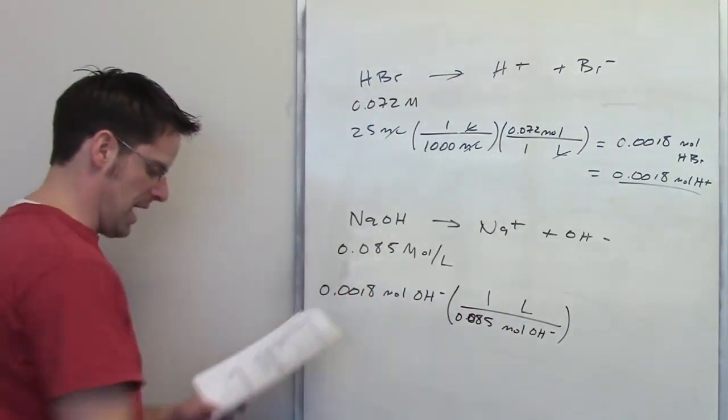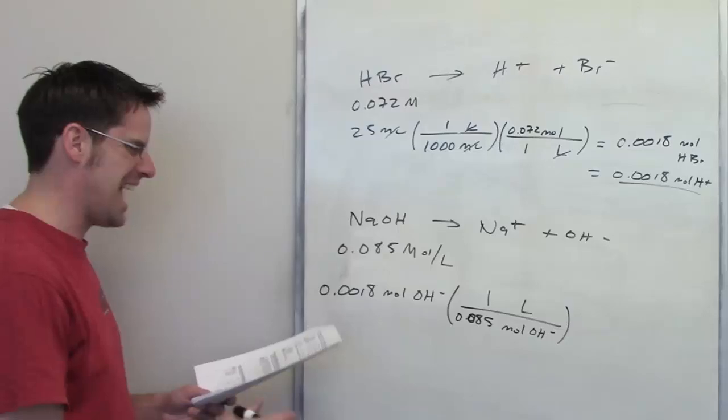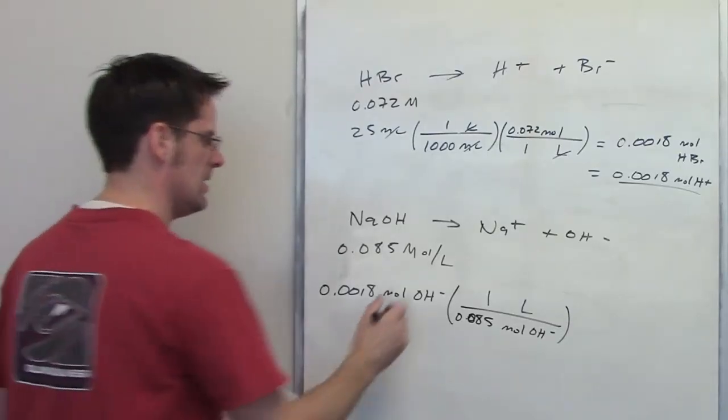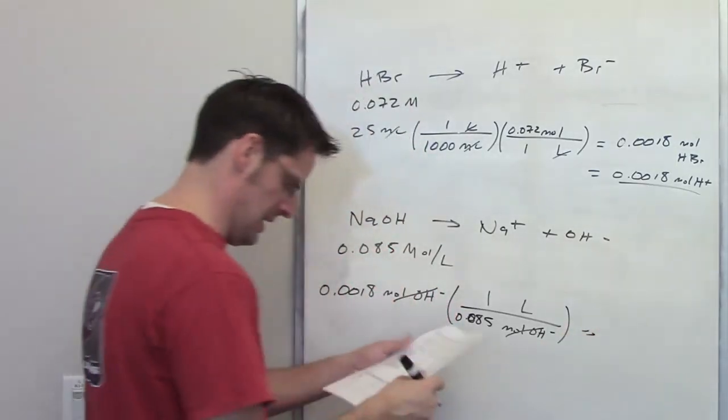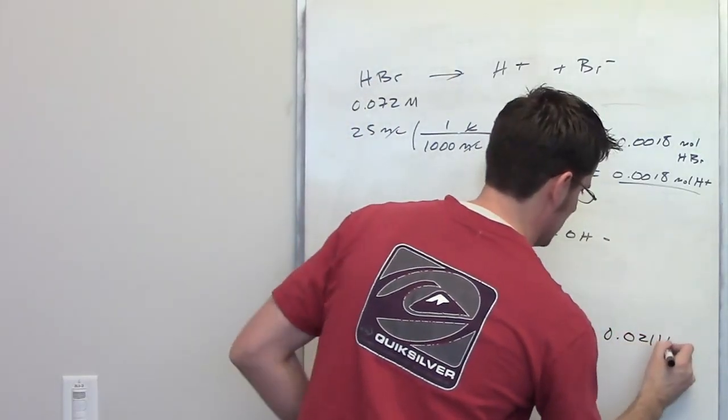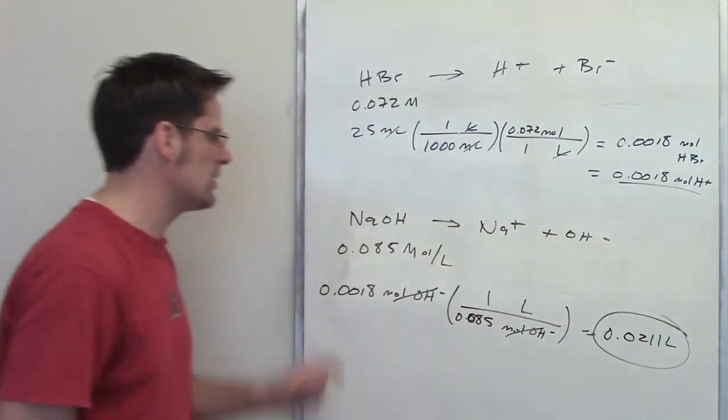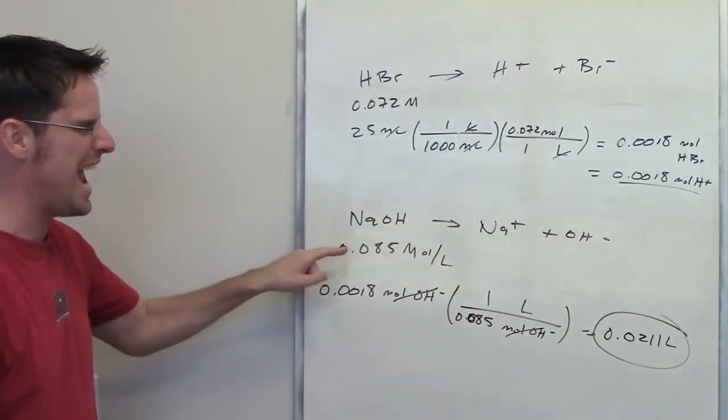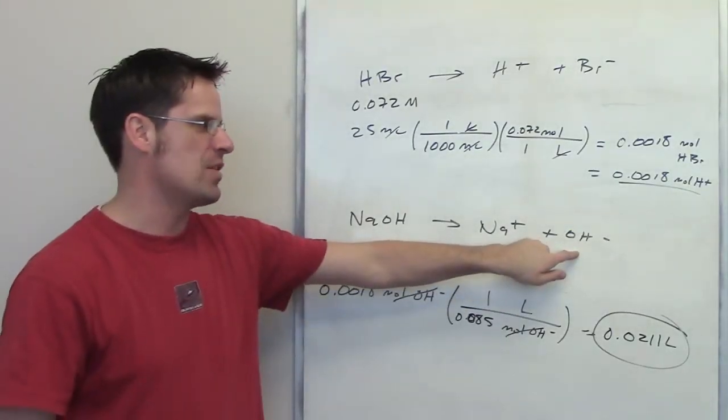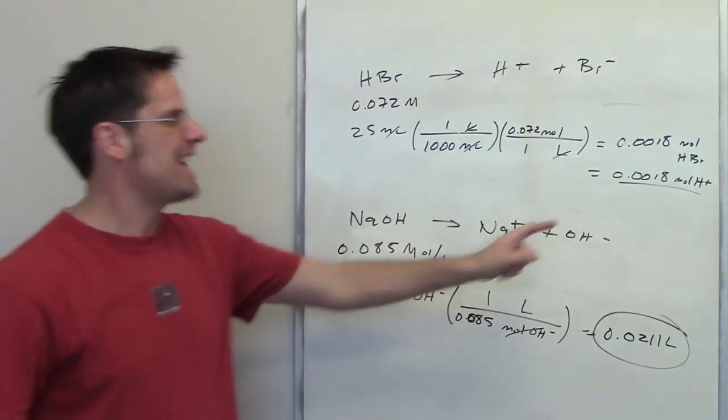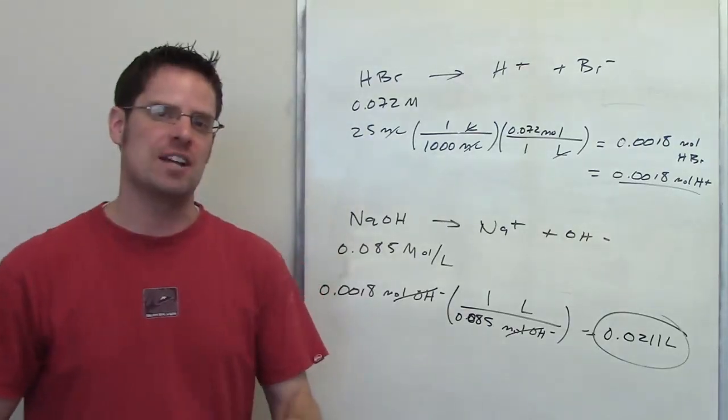If I do this math, that's going to spit out and tell me exactly how many liters I need. The moles of hydroxide cancel each other out. And the final answer that I end up getting is 0.0211 liters. That is the amount of sodium hydroxide at this concentration you need to add to get exactly 0.0018 moles of hydroxide at the other end, and thereby cancel out that exact number of moles of H+.